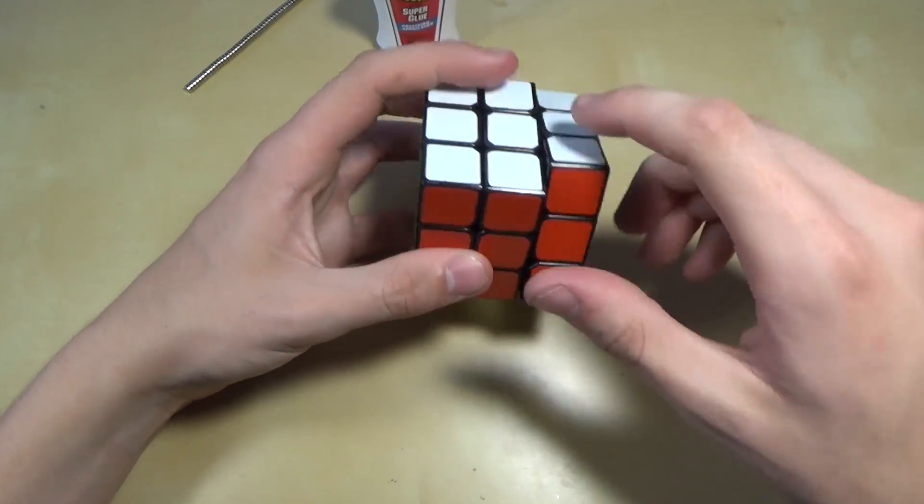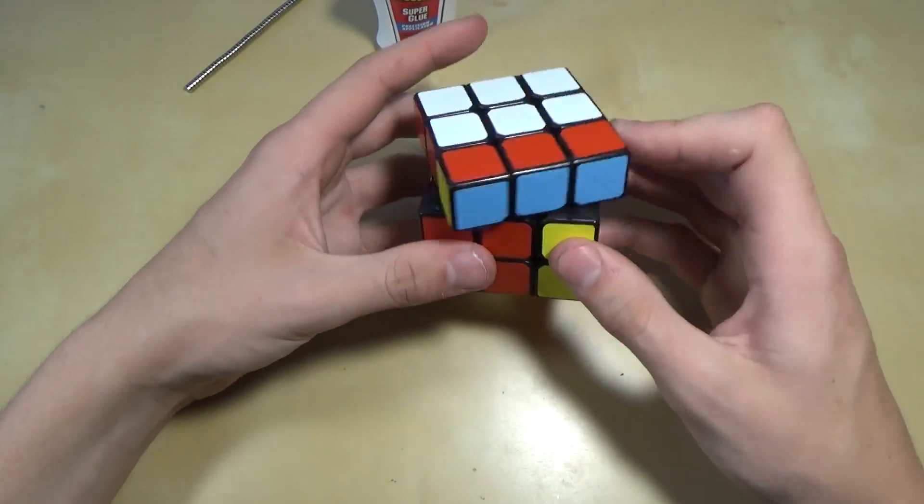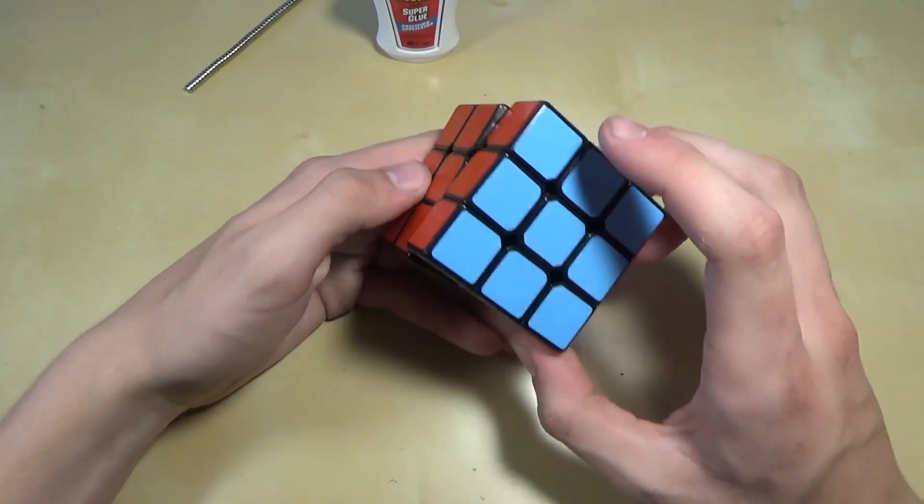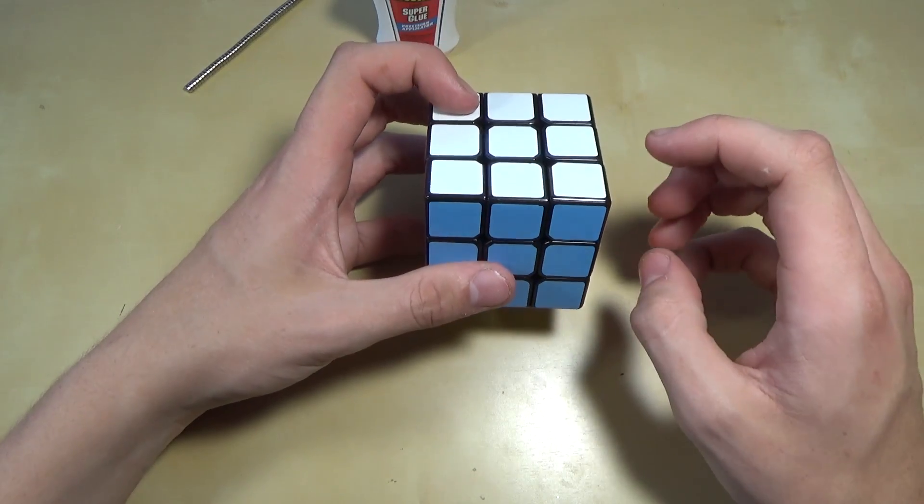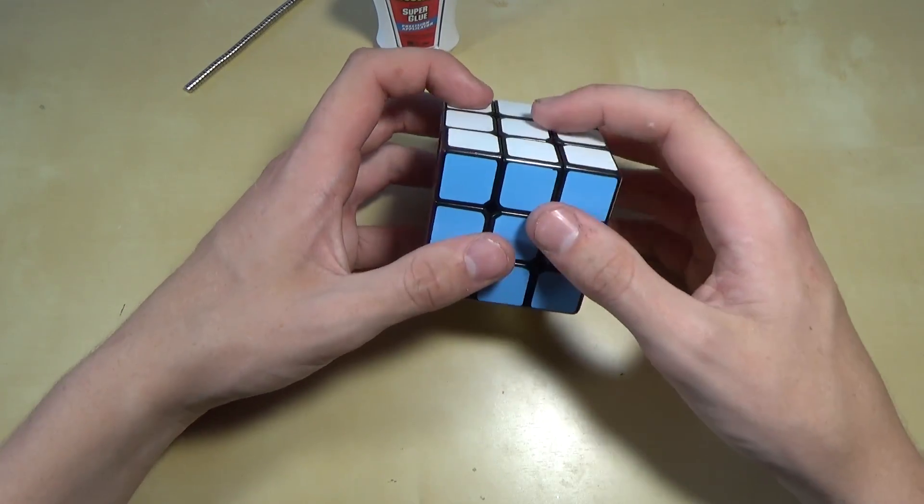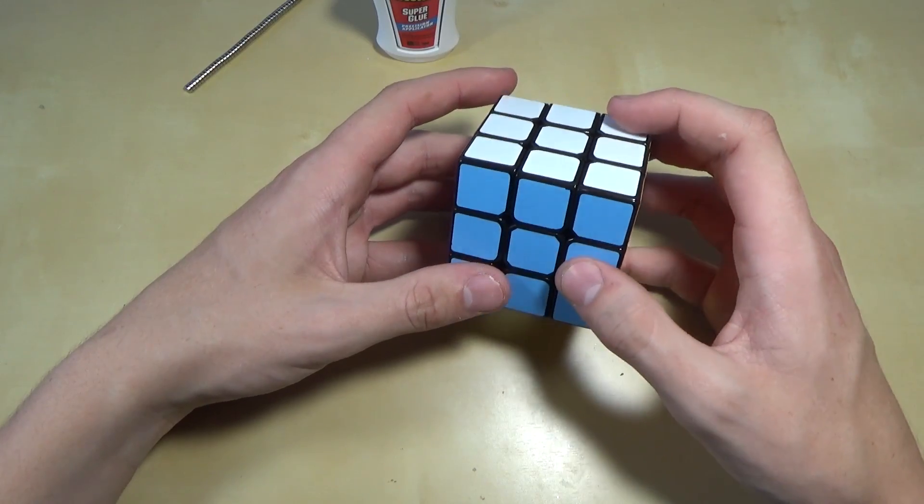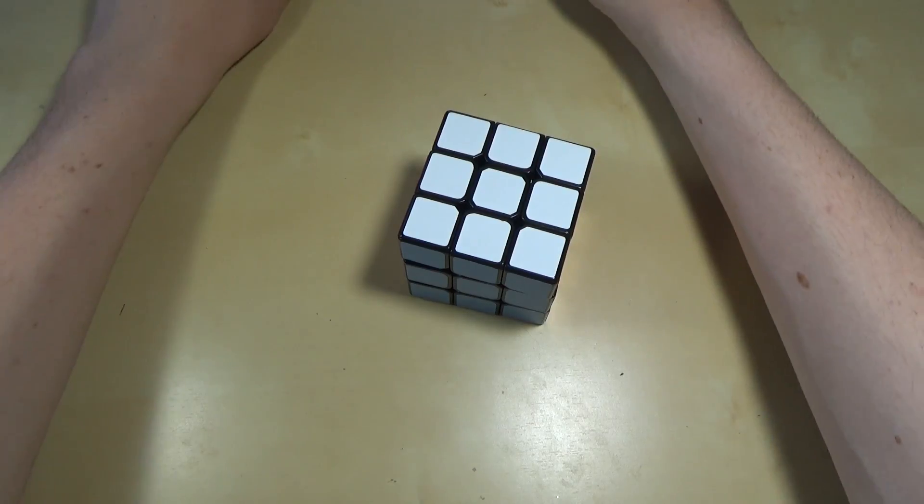For example, the Wheylong GTS has kind of caps that come outwards, and it's not exactly the same thing, but the concept is still pretty similar. Something like a Guanlong, a really cheap speedcube, has two-part edges and corners that won't work with this method, but I do have a video for those. Anyway, we can go ahead and get started.